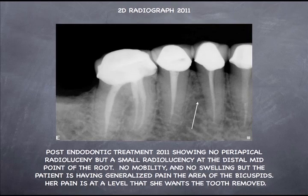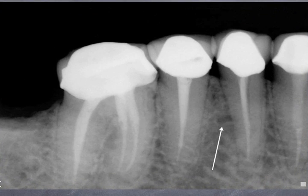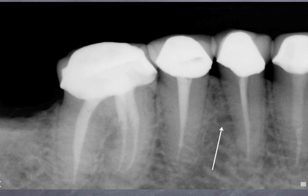The patient has generalized pain in the area, at a level where she just wants the tooth out. She has a history of having these teeth taken out and implants placed. But if you look at this x-ray carefully, there's really not a huge radiolucency there. You can scroll back and compare the 2009 x-ray — there is a little bit of change — but certainly nothing that would send up a red flag saying this tooth has a major problem.